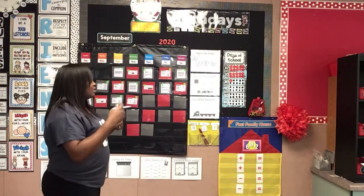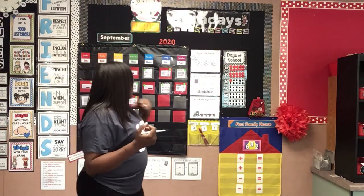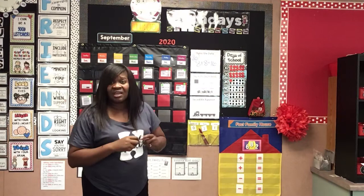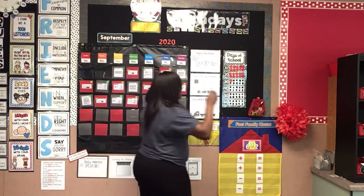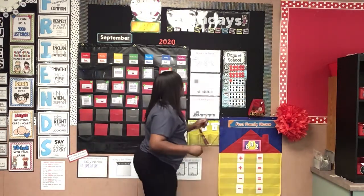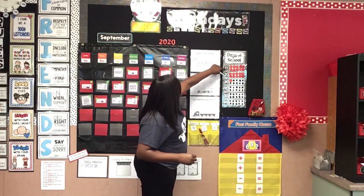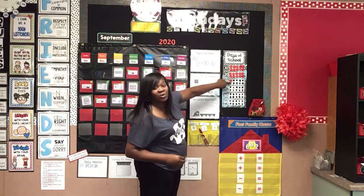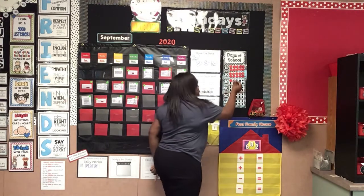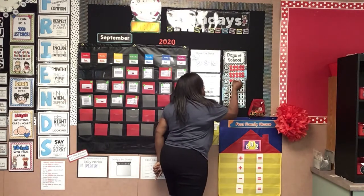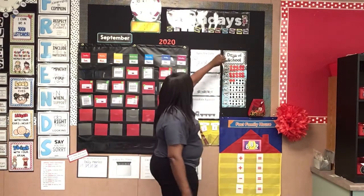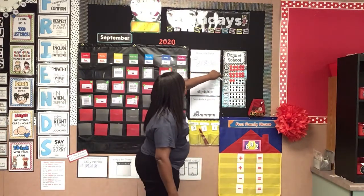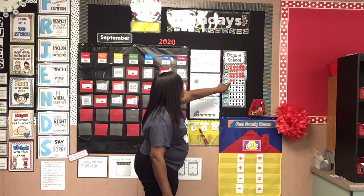Now we're going to add a day for being in school. We've been in school 10, 20, 21 — add one more counter — 22. Oh my goodness, you guys are 22 days smarter. So let's count that again: 10, 20, 21, 22.